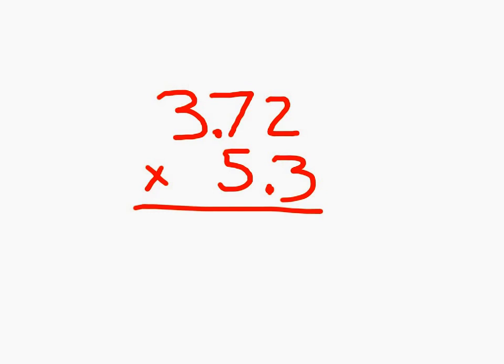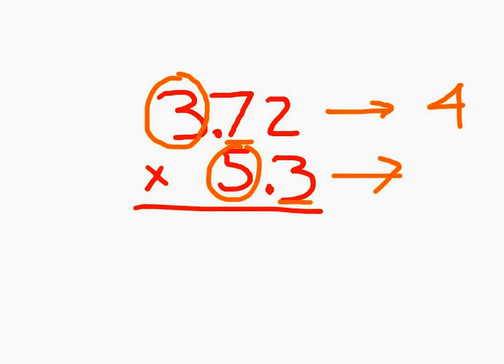To estimate this product here, we have 3 and 72 hundredths and 5 and 3 tenths. We go ahead and work with the 3 and 72 hundredths first, and that rounds to 4. 5 and 3 tenths would round to 5, and we multiply 4 times 5 together to get 20 as our estimated product.